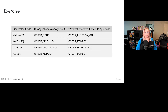In the next example, foo[x % 10], the modulus operator is the only operator acting on x, so the strongest operator against x is order modulus. The block of code could only split at the member operator, since the modulus operator is contained within square brackets, so the weakest operator that could split the code is order member. For !x && true, there are two operators acting on x — the logical not and the logical and operators. The logical not is the stronger operator, so the strongest operator against x is order logical not, and the weakest operator that could split the block of code is order logical and. In the final example, the strongest operator against x and the weakest operator that could split the code are both order member.